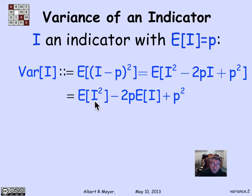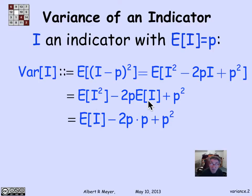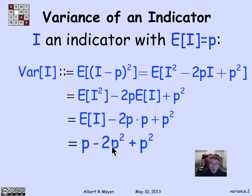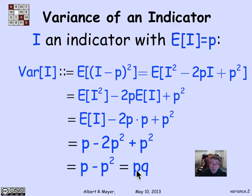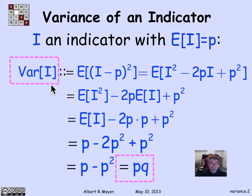Since I is 0-1 valued, I squared equals I, so the expectation of I squared is just E[I] = p. This term simplifies to p, and the middle term becomes 2p times p. So we get p minus 2p² plus p², and the p² terms cancel, leaving p minus p², which factors as p(1-p), or pq — the standard formula for the variance of an indicator variable.